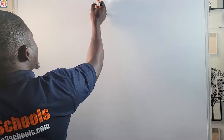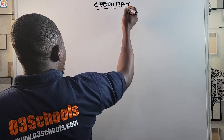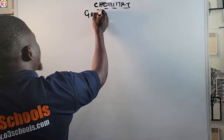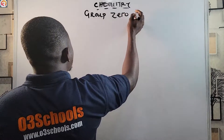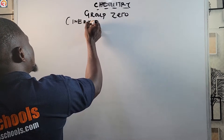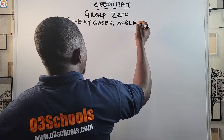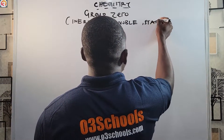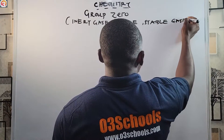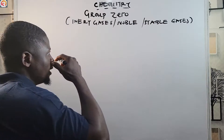Hello guys and welcome back to chemistry class. Today we'll continue our teaching on the periodic table and the families of elements. We are going to be looking at the group zero elements — also called the inert gases, the noble gases, or the stable gases. They are all the same names for the same group.